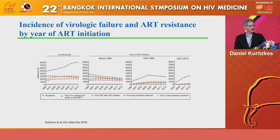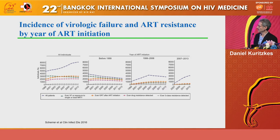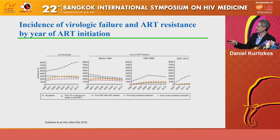This changed over the decades as therapy improved and the success of antiretroviral therapy in achieving full virologic suppression became greater, given the better potency, tolerability, and simplicity of contemporary regimens. Looking at all individuals treated from 1999 through 2013 — data from Andreas Scherer and colleagues from the Swiss HIV cohort — the number of individuals receiving treatment increased, while those who ever had virologic failure on single or dual nucleoside drug decreased slightly.